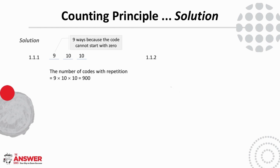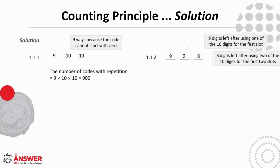For 1.1.2, where digits cannot be repeated, the first slot still has nine options for the same reason as before. There are then nine digits left for the second slot and eight digits left for the third slot. The number of codes without repetition is 9 times 9 times 8, which is 648.